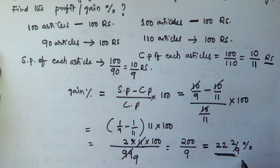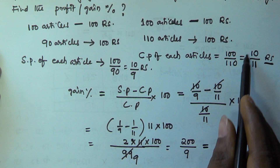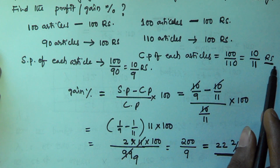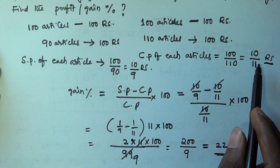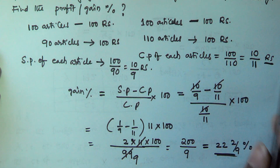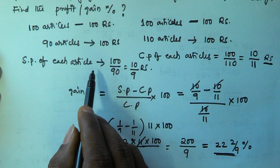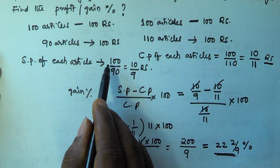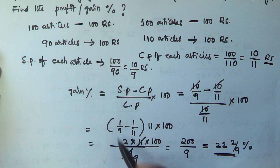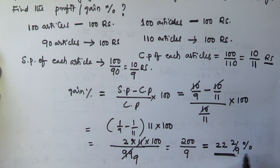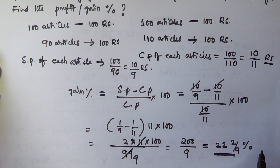So the gain percentage is 200/9, which is 22 and 2/9 percent. First we found the cost price of each article with respect to the defraud of 10% in buying, then the selling price with respect to the defraud of 10% in selling, and calculated the gain percentage as 22 2/9%. I hope you got this. Thank you very much for watching this video. Please subscribe and share.